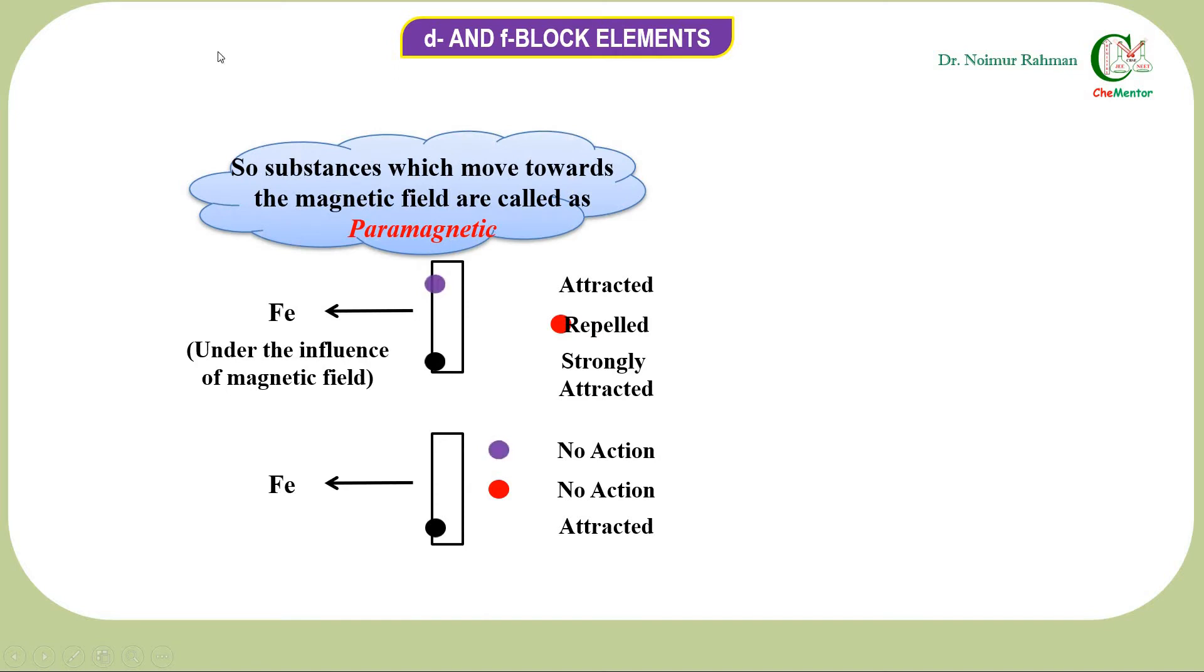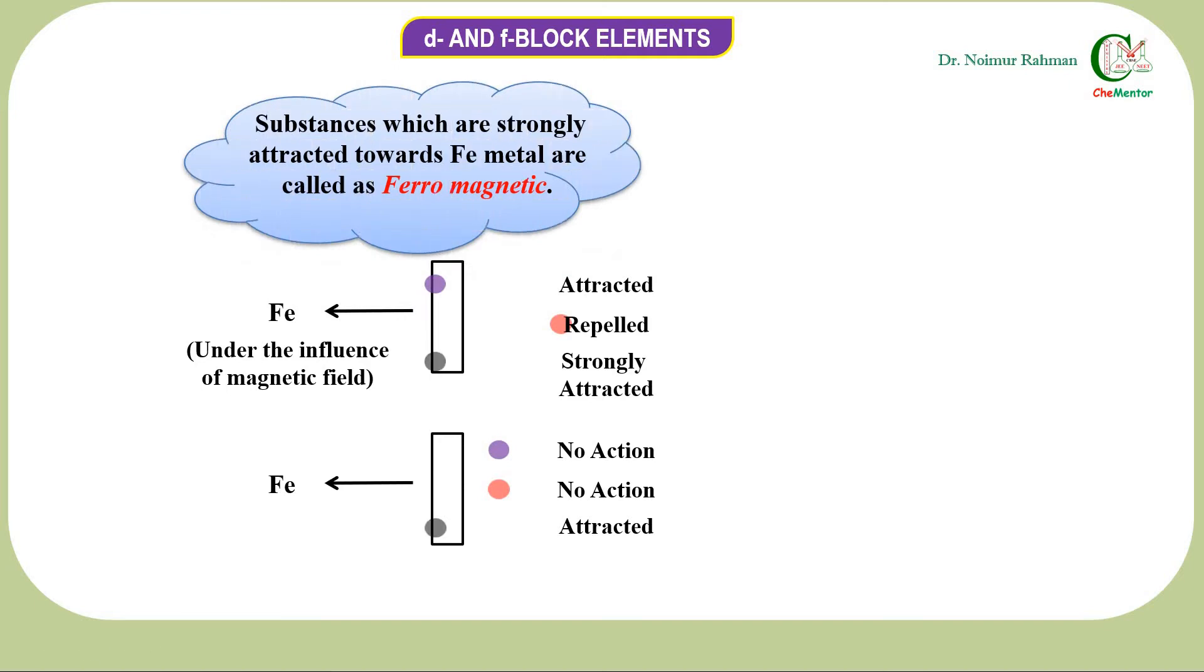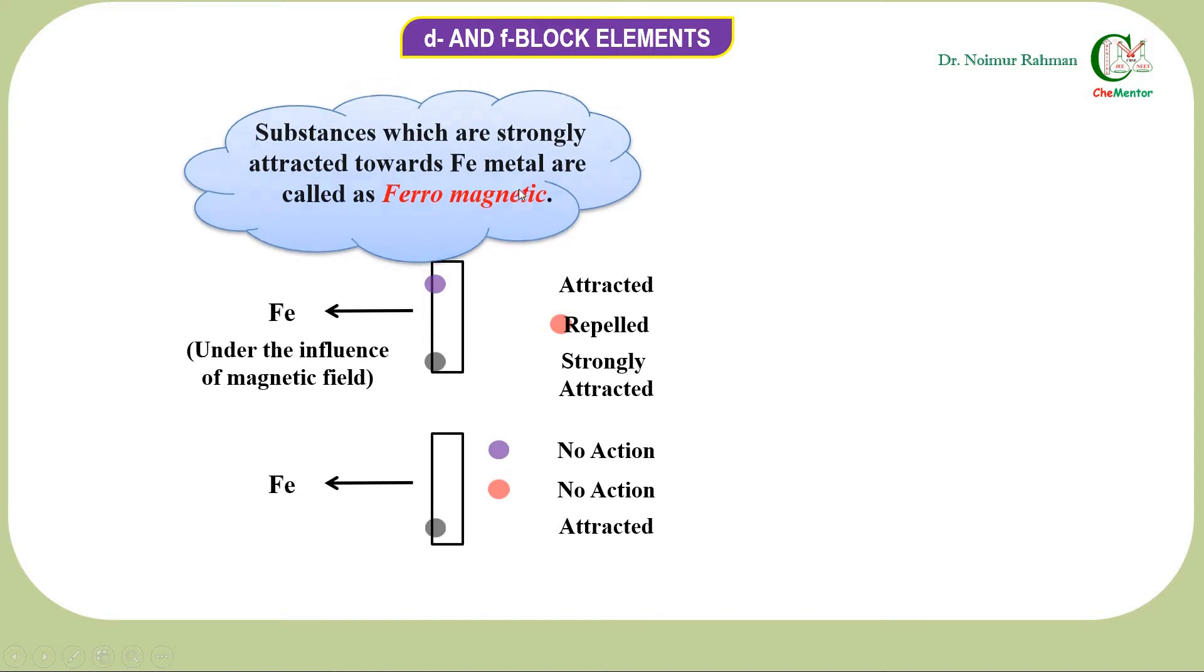So substances which move towards the magnetic field are called paramagnetic substances, while substances which move away from the magnetic field are called diamagnetic substances. Substances which are strongly attracted towards iron metal are called ferromagnetic substances.